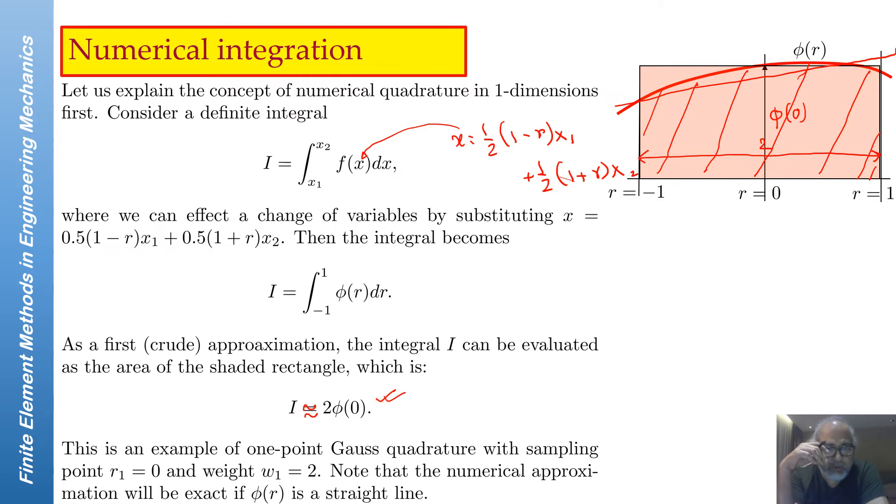Taking this idea forward, this method of estimating the area under a curve by the area of a rectangle is known as Gauss quadrature. This approximate formula is for one-point Gauss quadrature, where we call phi(0), that means R equal to 0, as the sample point. The width of the rectangle w is equal to 2, and this w is called a weight corresponding to the sample point.